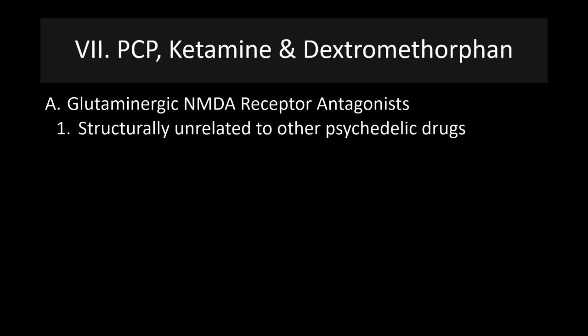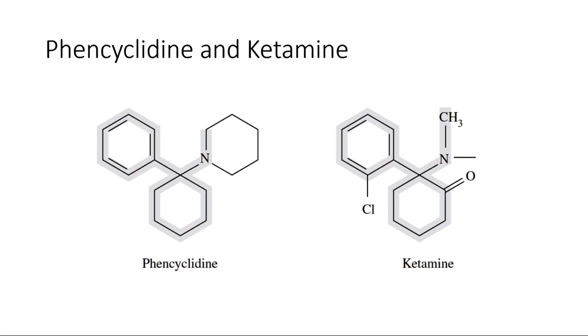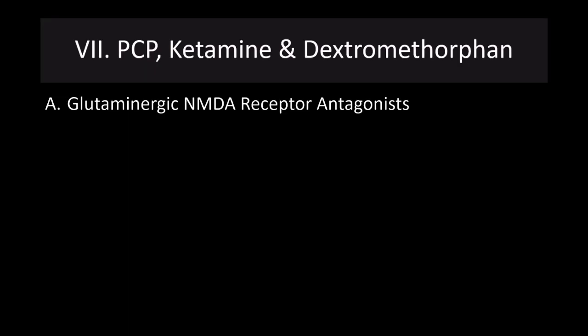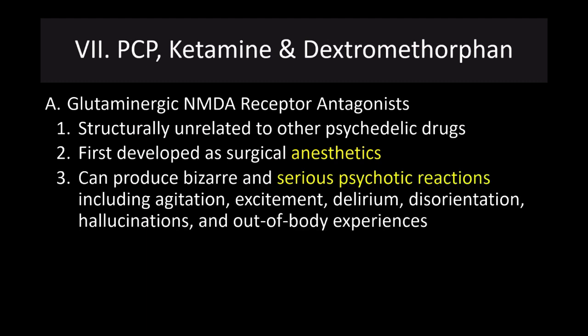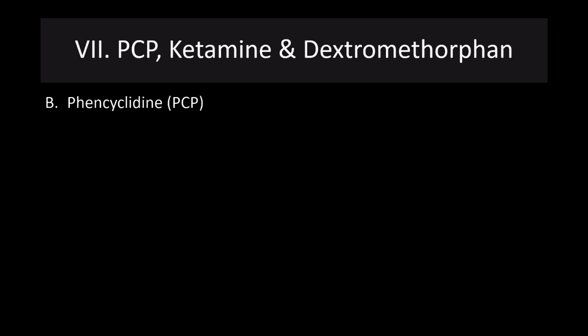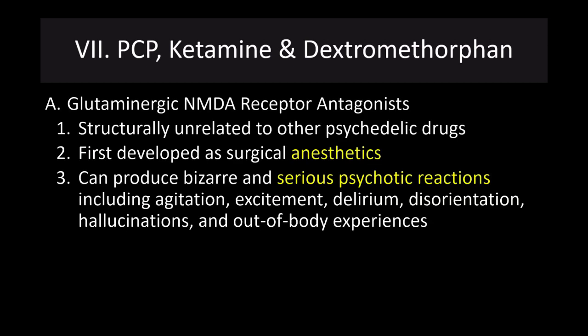The glutamatergic NMDA receptor antagonists include PCP, ketamine, and dextromethorphan. These are structurally unrelated to other psychedelic drugs — completely unlike LSD and psilocybin. PCP and ketamine are fairly similar to one another but structurally different from the serotonergic drugs. These do not affect serotonin but act at the NMDA receptor. They were first developed as surgical anesthetics and can produce rather bizarre and serious psychotic reactions, including agitation, excitement, delirium, distortion, hallucinations, and out-of-body experiences. PCP in particular is well known for causing serious psychotic reactions and can be particularly dangerous.